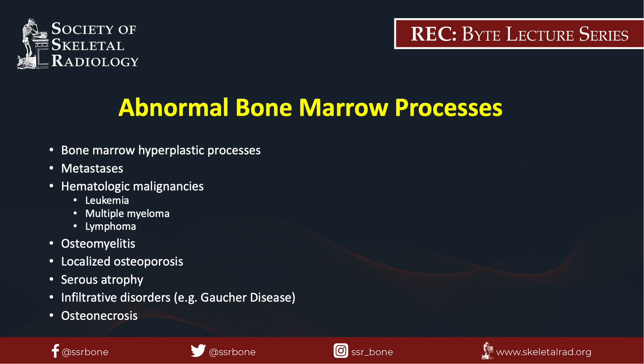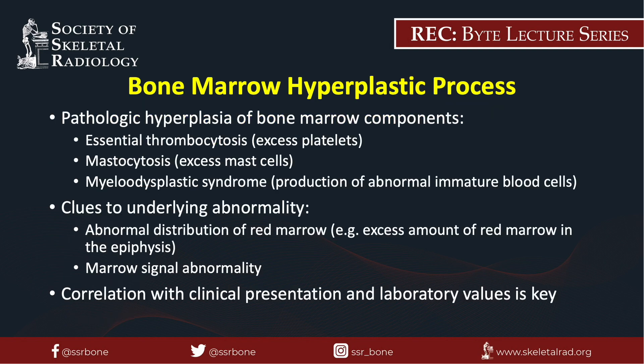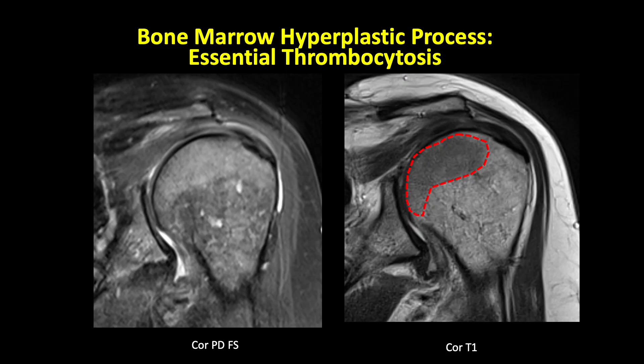Bone marrow hyperplastic processes represent conditions of pathologic hyperplasia of bone marrow elements and include conditions such as essential thrombocytosis, mastocytosis, and myelodysplastic syndromes. Clues include abnormal distribution of red marrow as well as abnormal marrow signal; correlation with clinical presentation and laboratory values is key. Here's an MRI of a shoulder in a patient with essential thrombocytosis — within the epiphysis there is a disproportionate amount of red marrow relative to the metaphysis, which is not consistent with red marrow reconversion and is compatible with their known history of essential thrombocytosis.